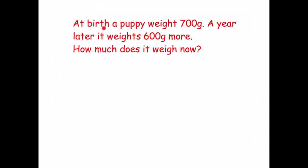At birth a puppy weighs 700 grams; a year later it weighs 600 grams more — how much does it weigh now? Let's underline the important bits: at birth it weighed 700 grams, a year later 600 grams more, and we have to work out how much it weighs now. Again we can look at it in a bar model.